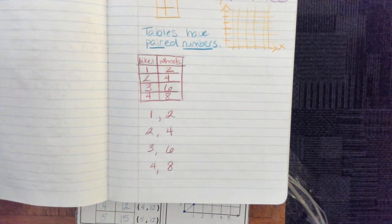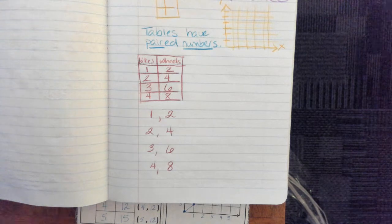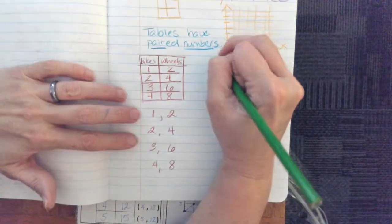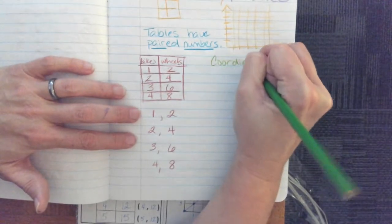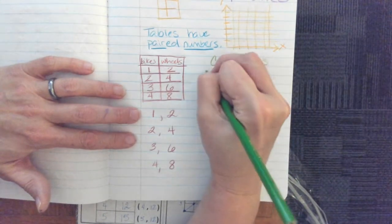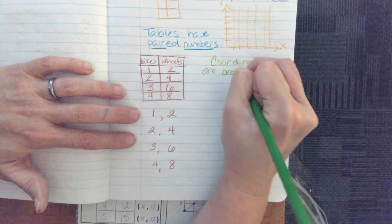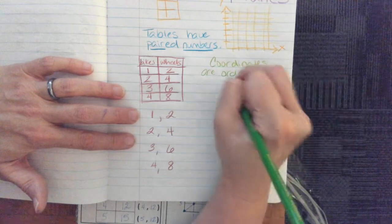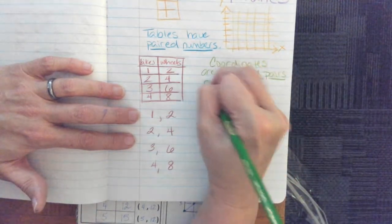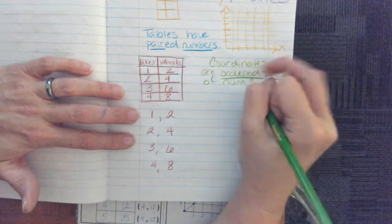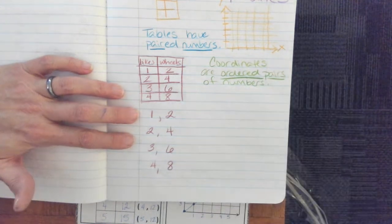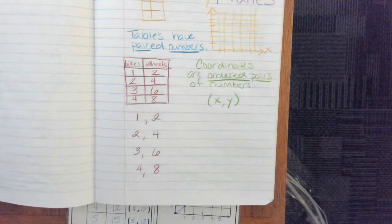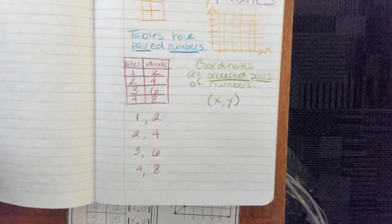Coordinates, like on a coordinate plane, are ordered pairs of numbers. And they follow an x, y kind of formula.